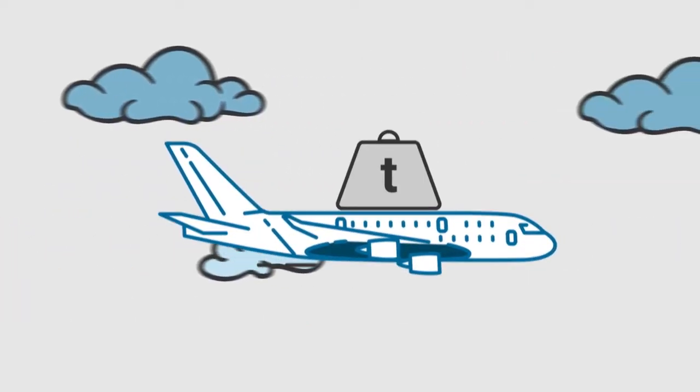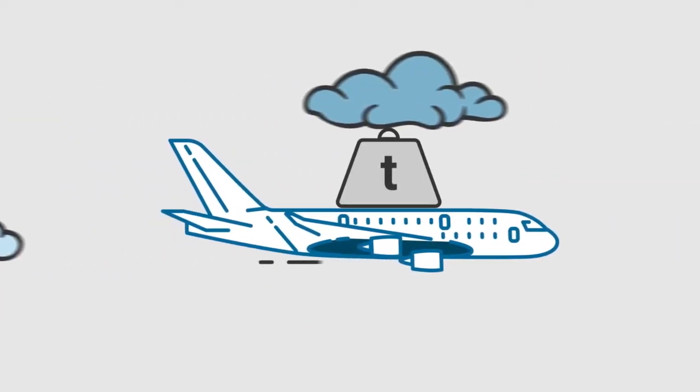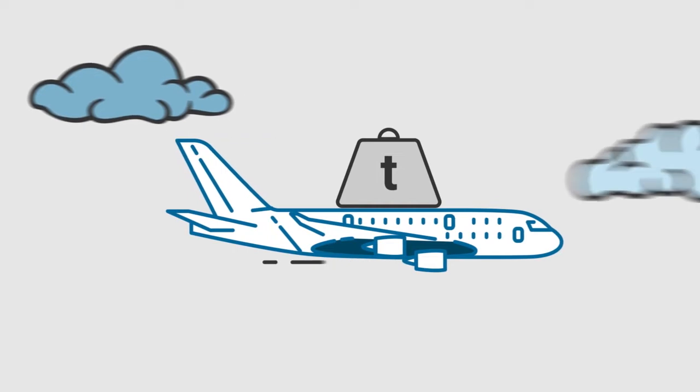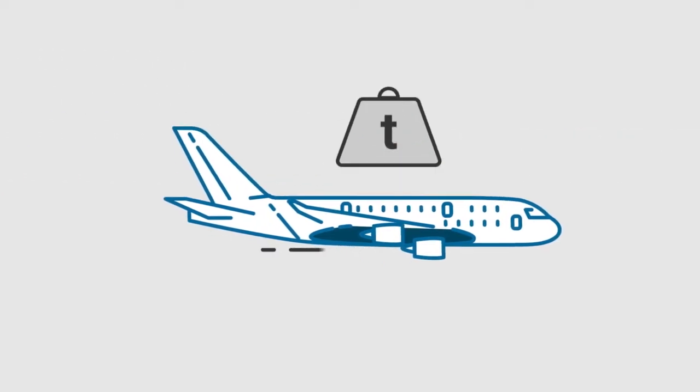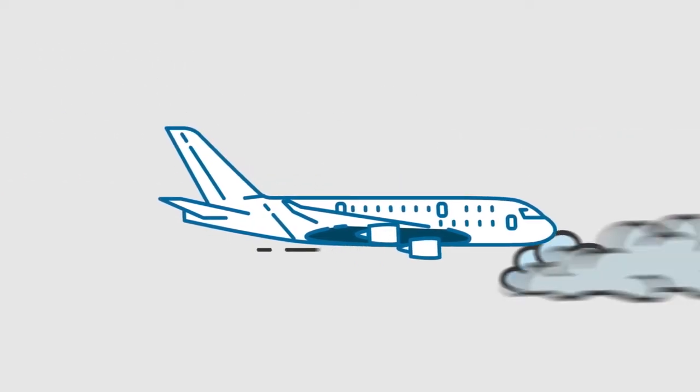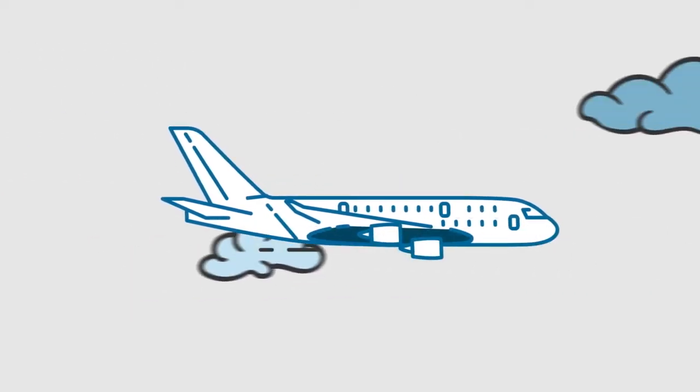Another solution would be to make the airplane lighter. We can do so, for example, by making the body of the airplane from a material which is equally strong but weighs less. This and similar research questions can be answered by looking very closely at the materials.